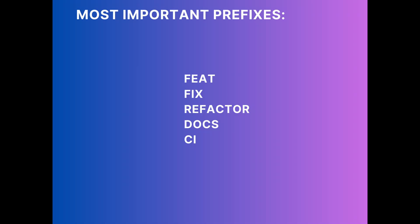To sum it up, the top five prefixes I use are: feat, fix, refactor, docs, and ci. I do not use the "test:" prefix, because tests always come together with the code being pushed — so it makes no sense to add a separate test commit. We usually add tests as part of the feature commit alongside the code coming into the codebase.